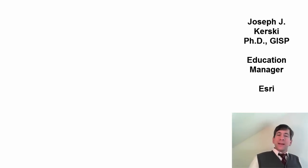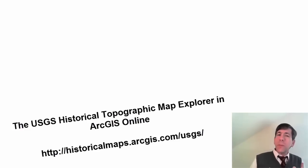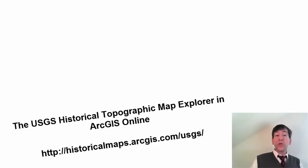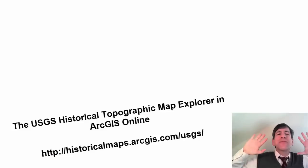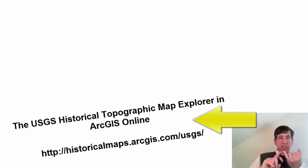Hi folks. Investigating land use change over time has always been a mainstay of geography and environmental education and research. Recently, several new ways of accessing more than 175,000 historical USGS topographic maps through ArcGIS Online make land use change even more accessible to students, educators, and researchers.